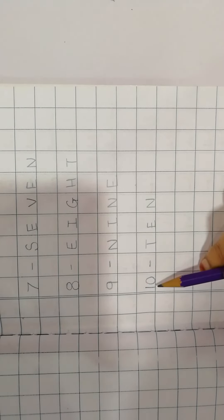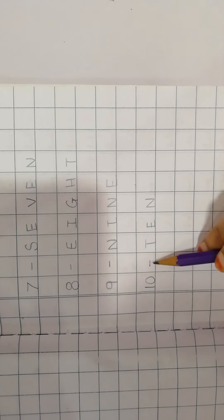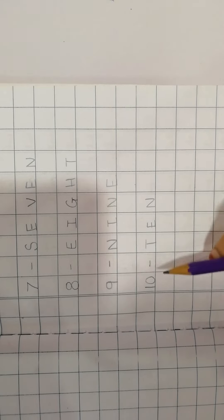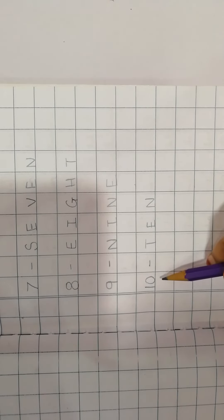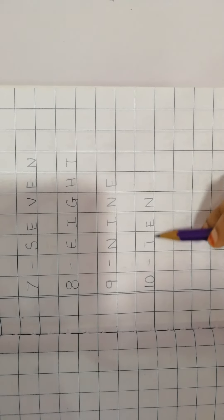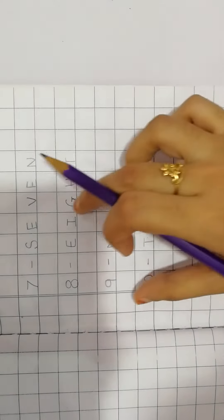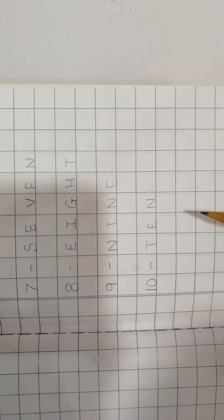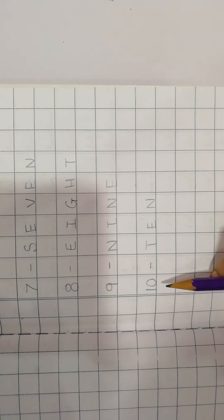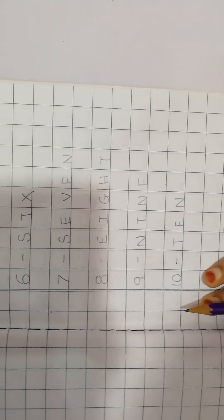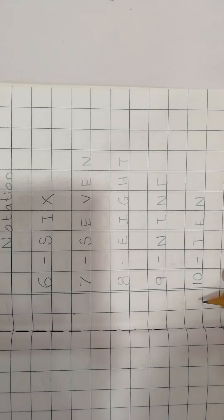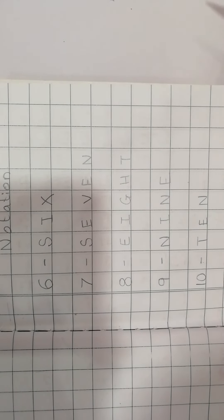So children, revise number 10 notation. Write down full page and say and write. Okay children, I am waiting for you all. Till then, revise our notations and learn them by heart. I will be waiting for your homework children. Bye bye. See you next time.